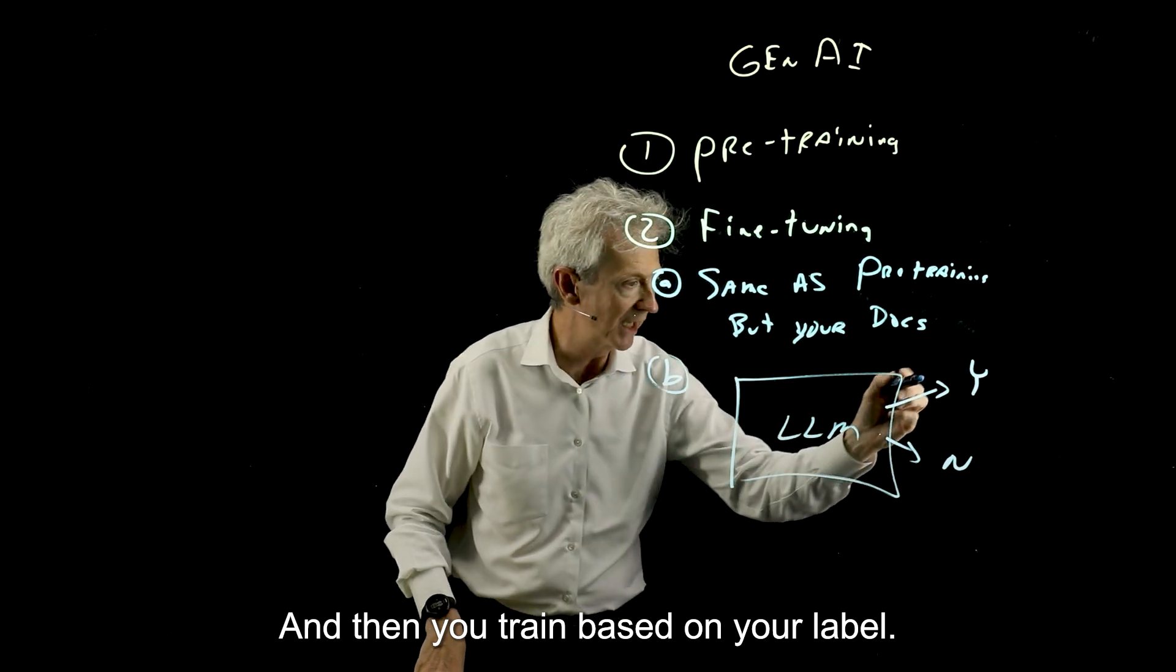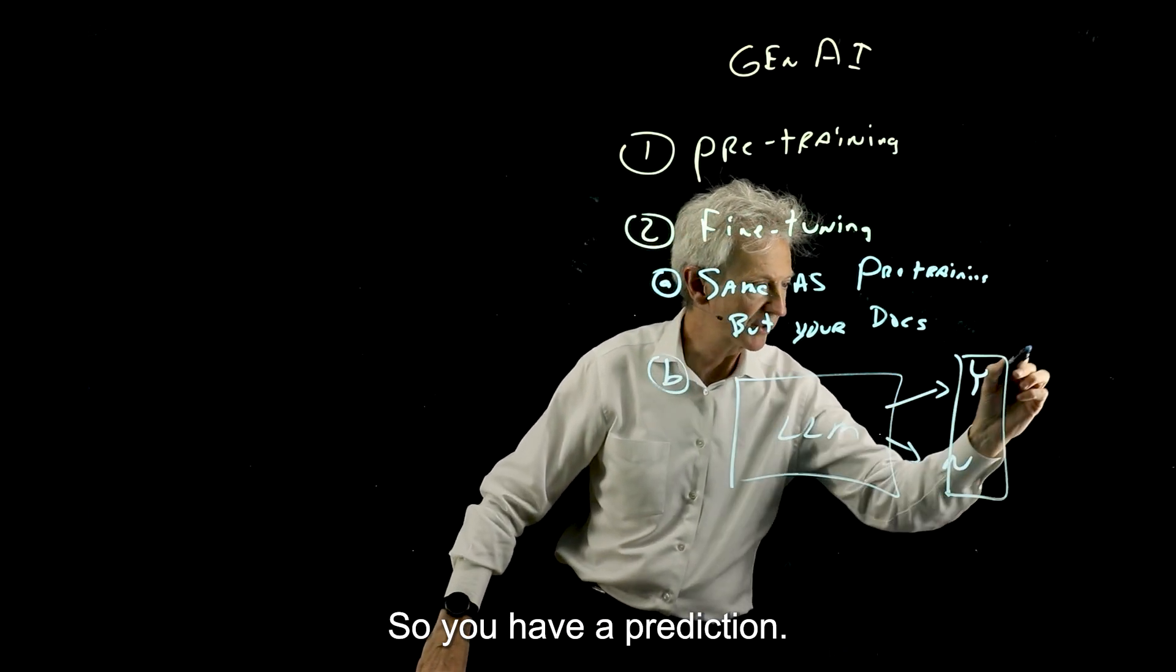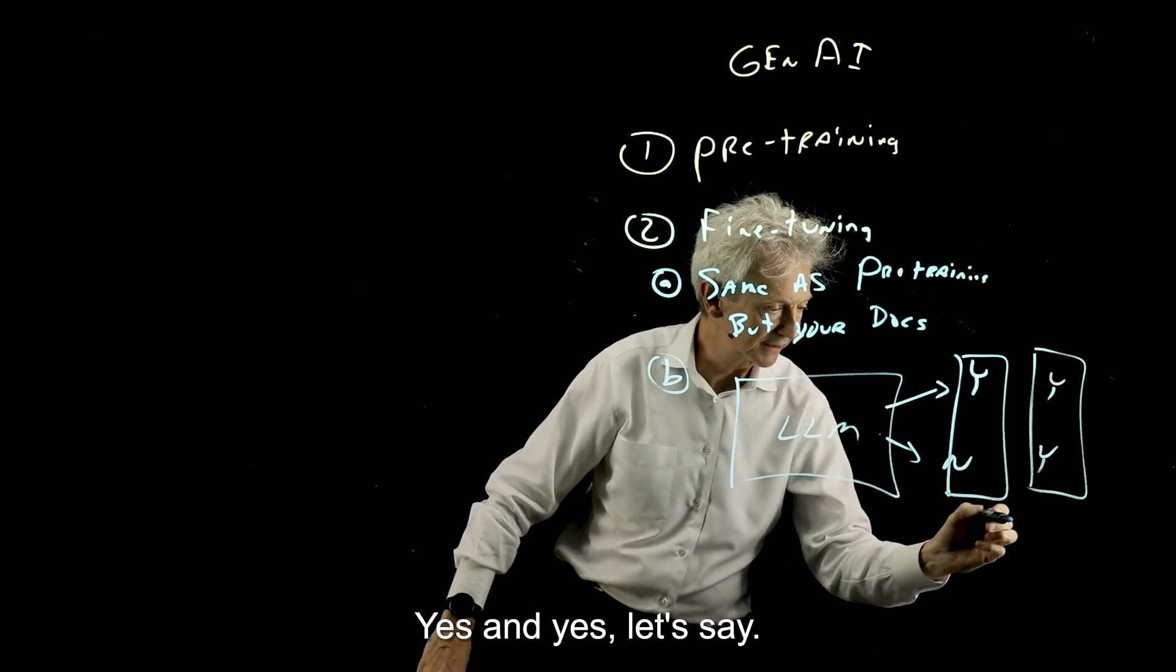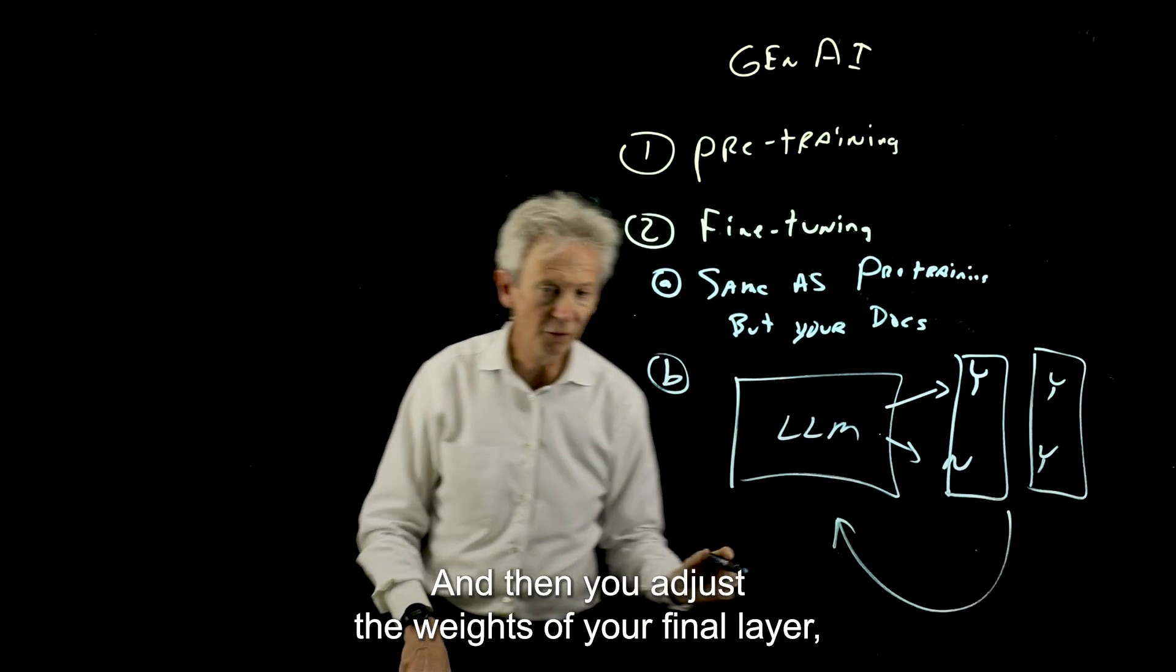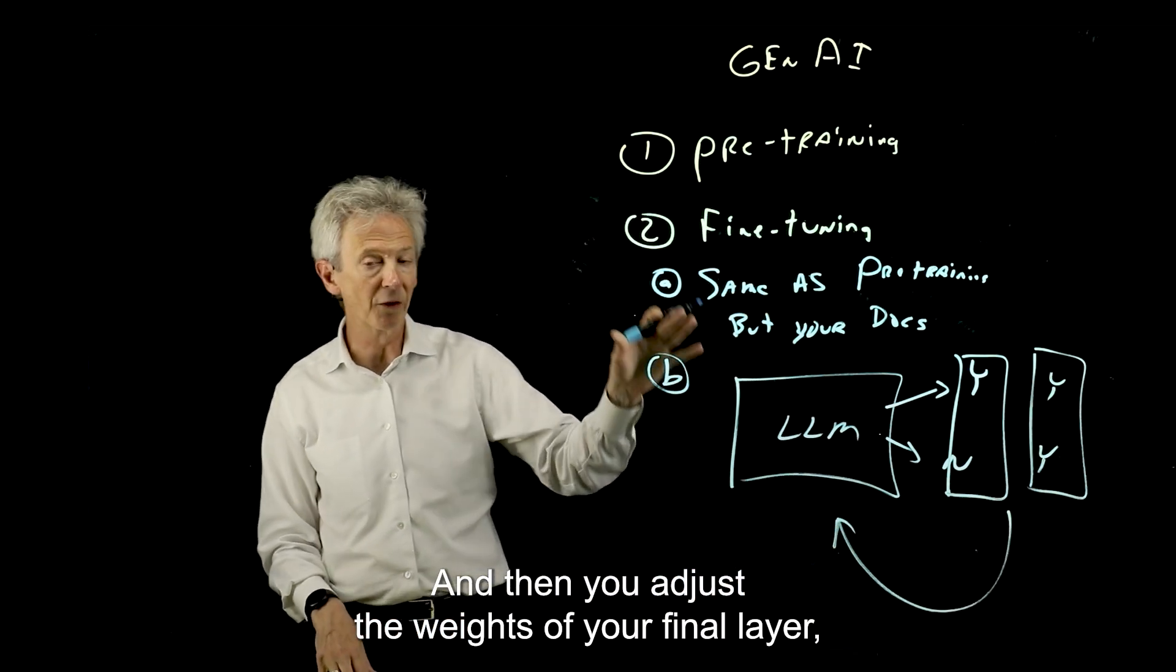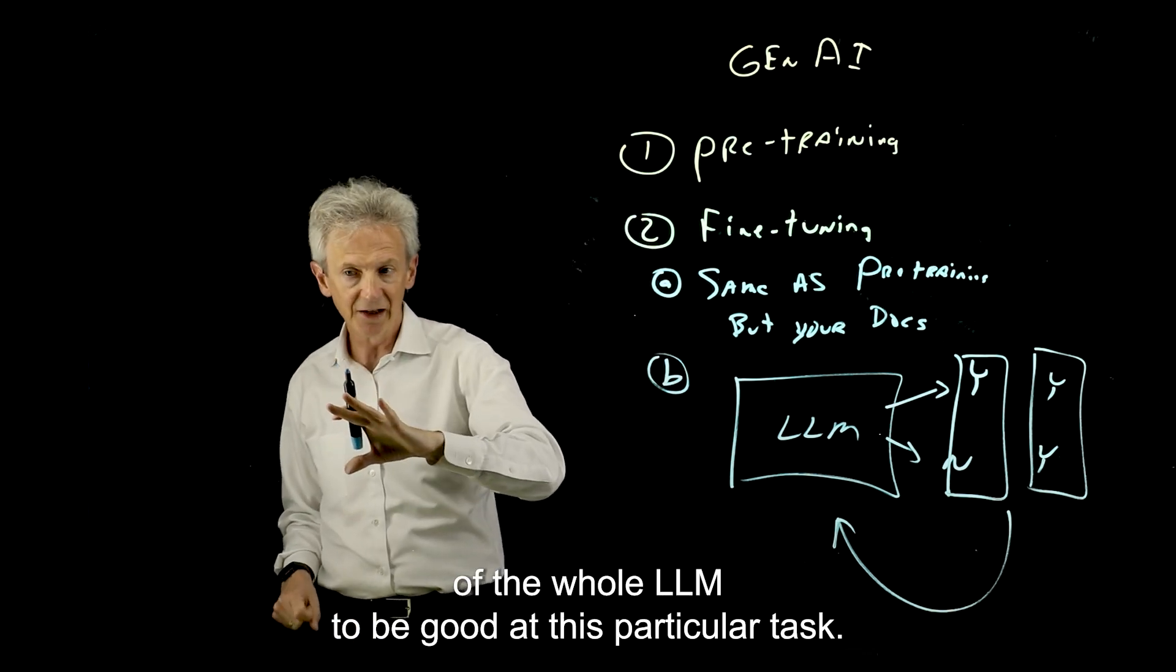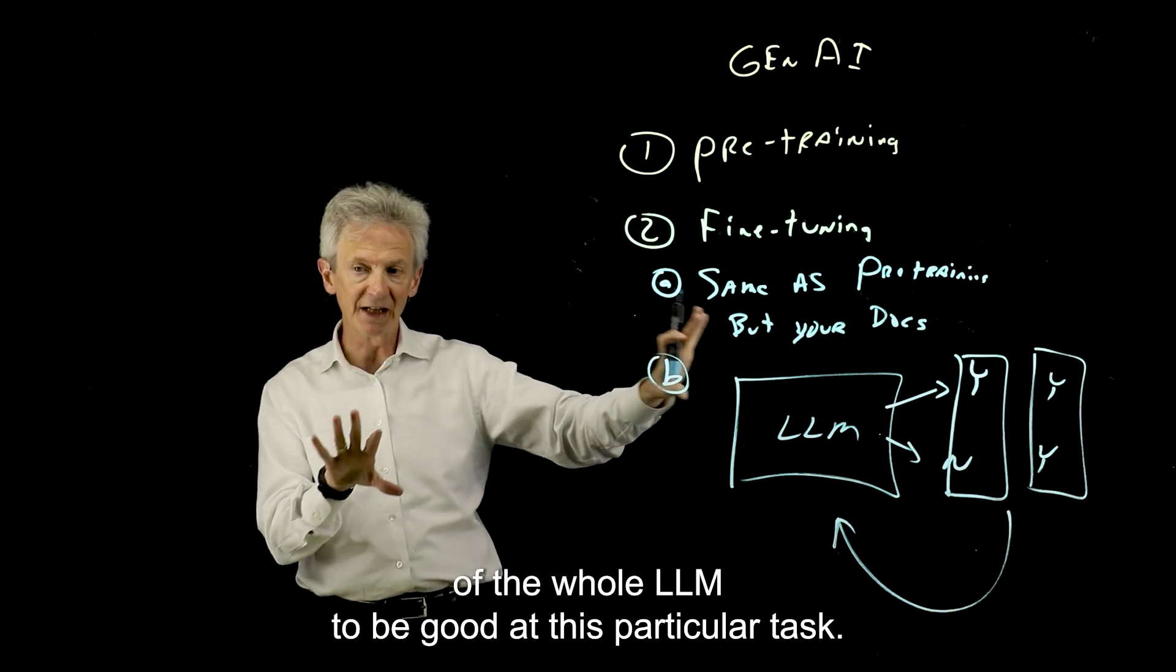And then you train based on your label. So you have a prediction, you have your label, yes and yes, let's say. And then you adjust the weights of your final layer, but also you can adjust the weights of the whole LLM to be good at this particular task.